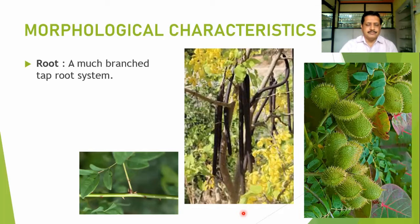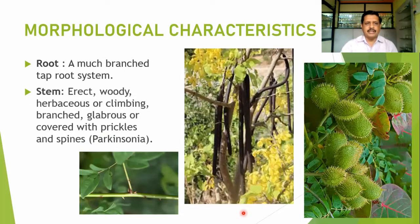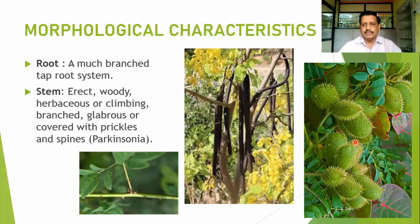Let's talk about the morphological characters of the plant. We start with the root structure: it is a well-branched tap root system, as most members are shrubs and trees along with climbers. Stems are mostly erect, woody, or sometimes climbers, and are branched. They are glabrous or covered with prickles and spines, as in Parkinsonia. One common plant in our region is Sagargoati, which is Caesalpinia bonducella — a climber. Cassia fistula is known for its long straight pods with pendulous inflorescences. Caesalpinia also has spines on the stem.